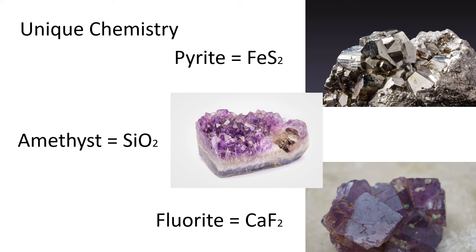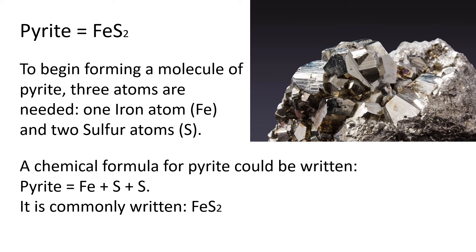Let's look at pyrite. To begin forming a molecule of pyrite, three atoms are needed: one iron atom and two sulfur atoms. These atoms come from the natural environment. A chemical formula for pyrite could be written as pyrite equals iron plus sulfur plus sulfur. It is commonly written as FeS2. The little two refers to the two atoms of sulfur.